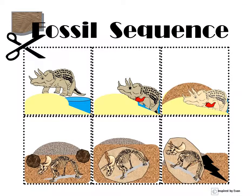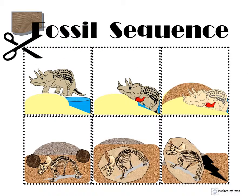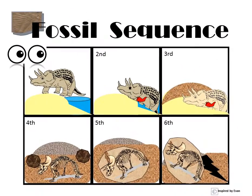Also, within each of the four sets of fossil sequence pages, there will be a dashed line page for a possible cutting out, cut and paste task, or cutting out and laminating — adding Velcro and using it on a later blank template board where you can have the student order them in proper sequence for assessment.